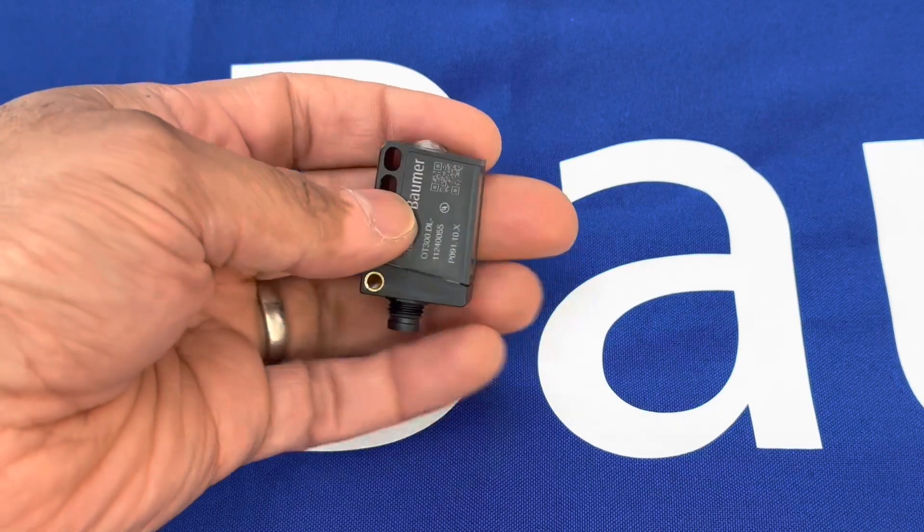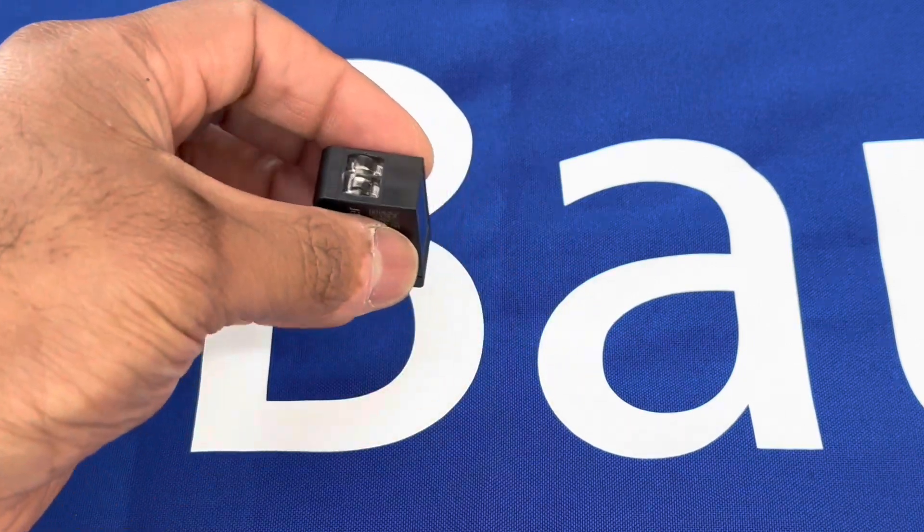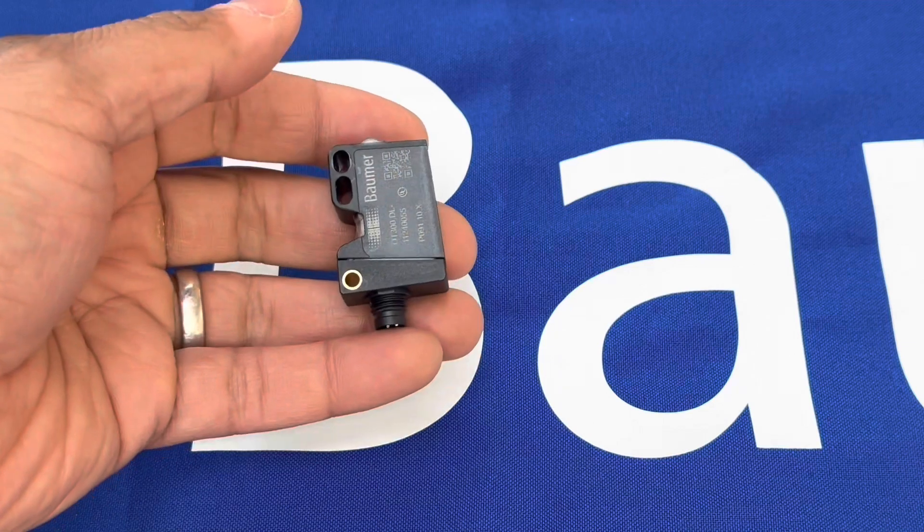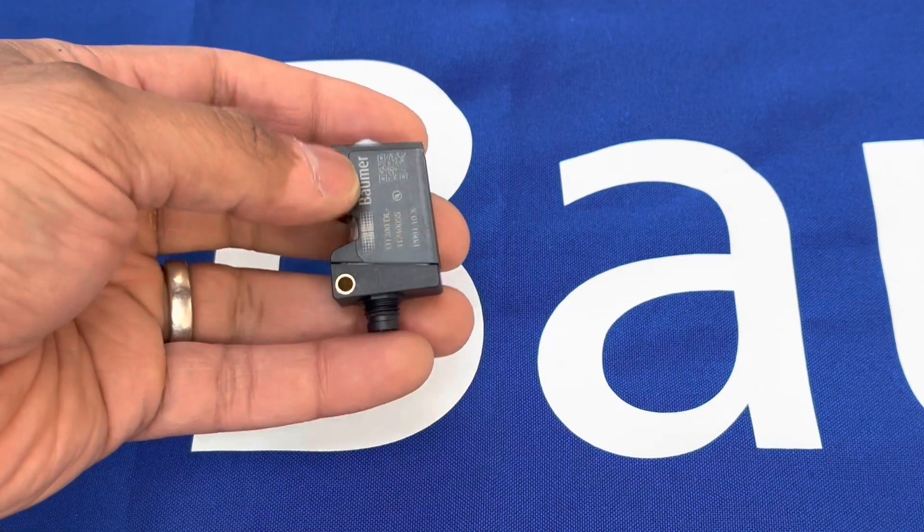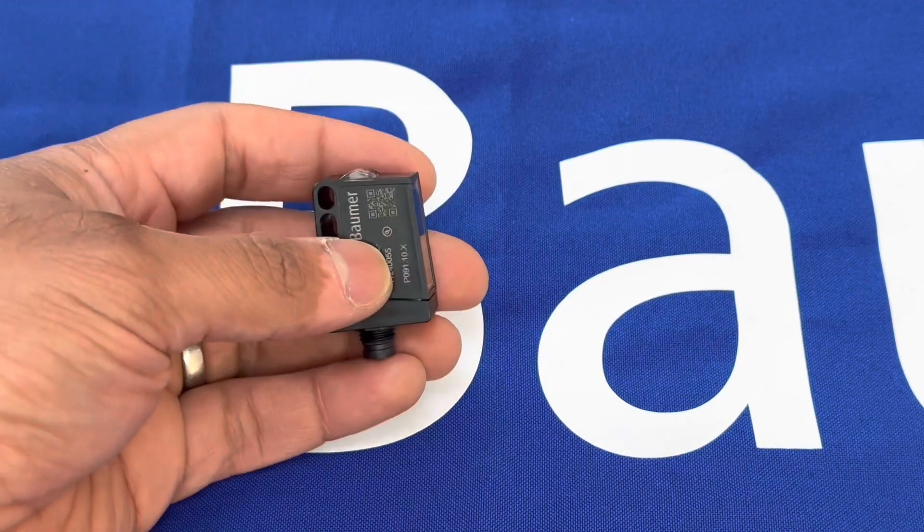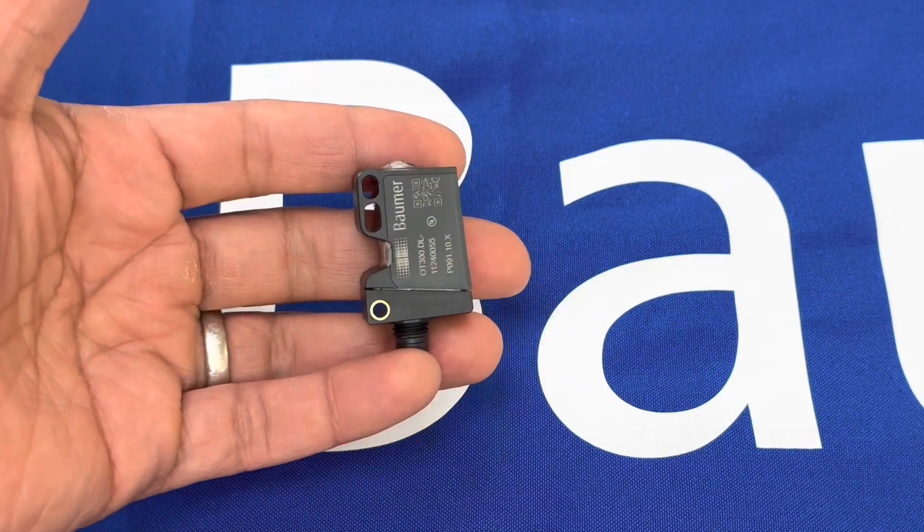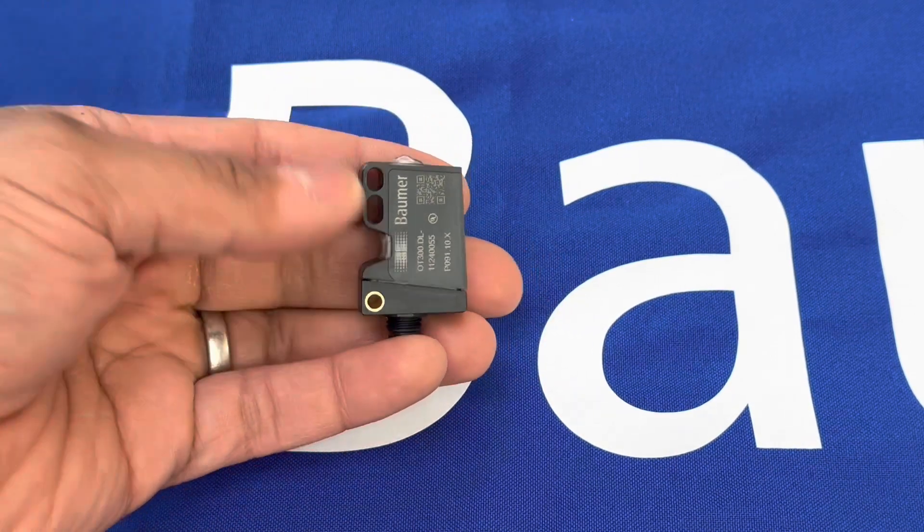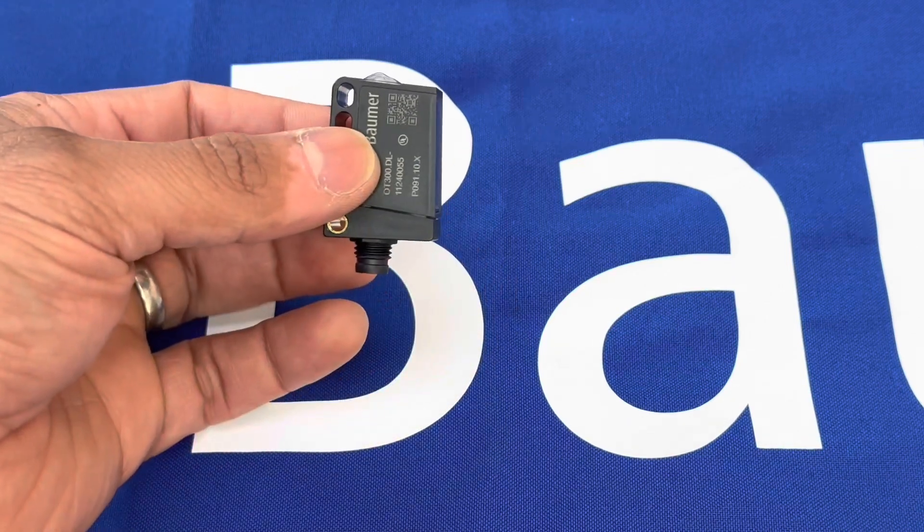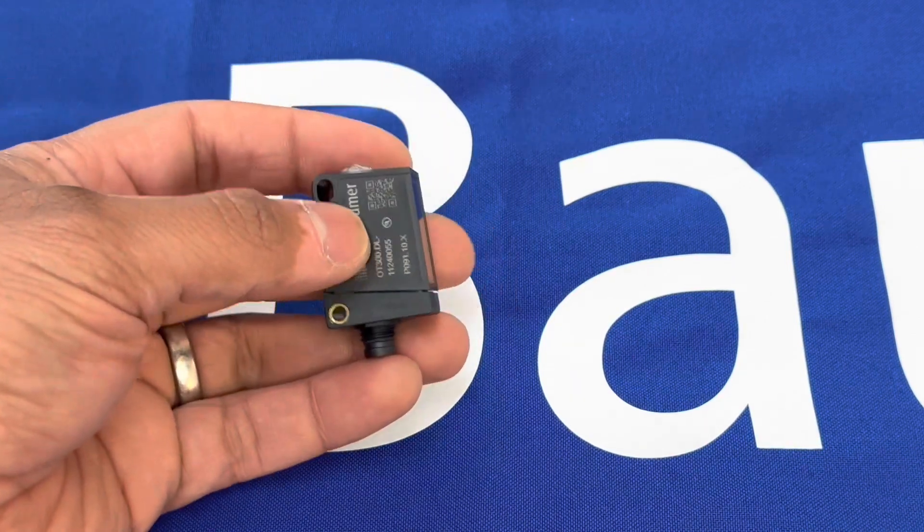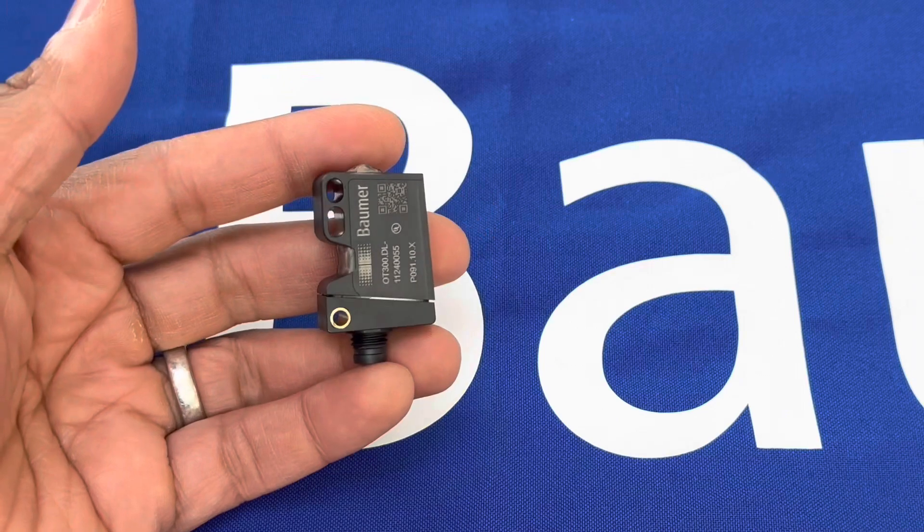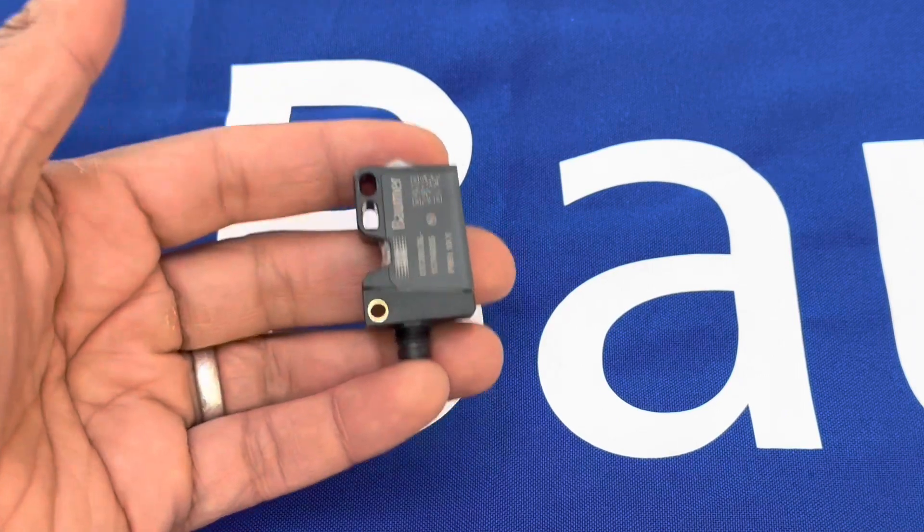This is the OT300, a time-of-flight technology sensor with a measuring range of 100 millimeters all the way up to 1.8 meters with a nice small beam spot. It gives you an analog output direct from the sensor of 0 to 10 volts which is teachable.